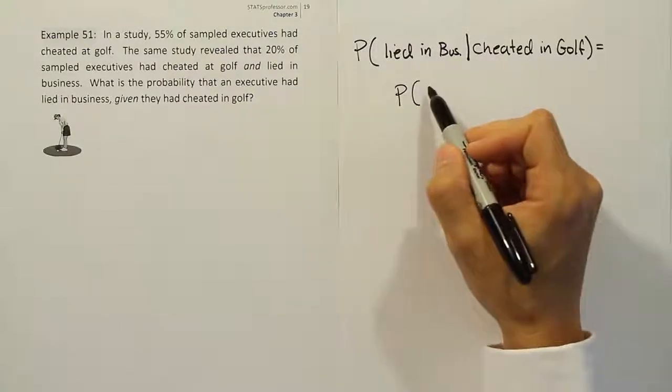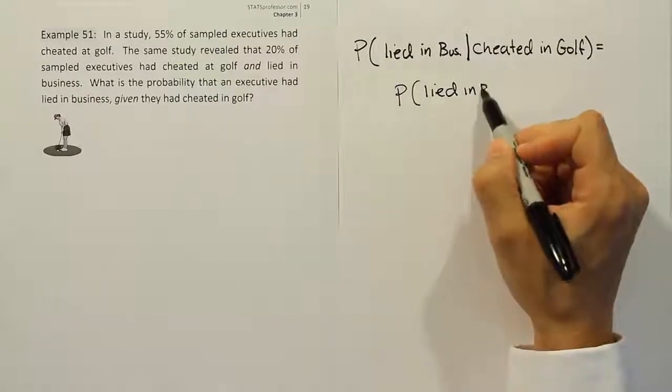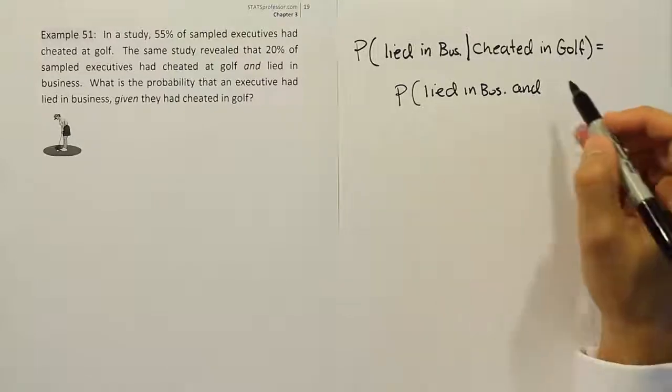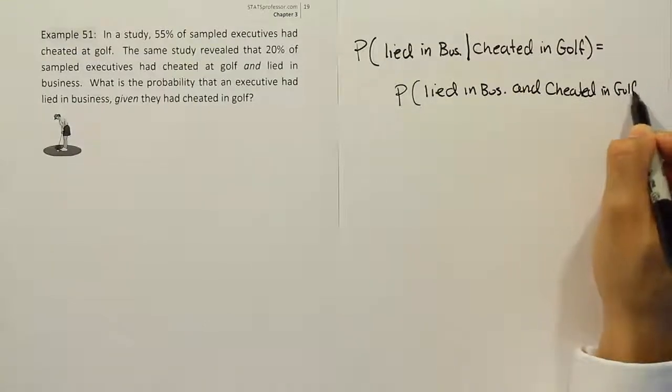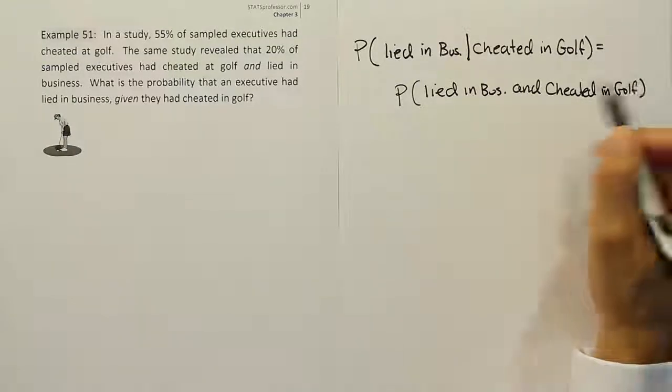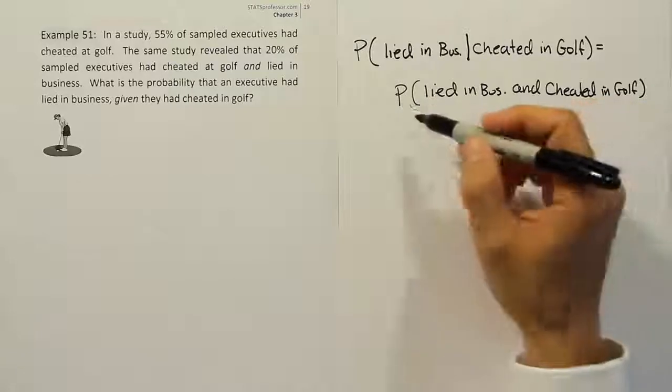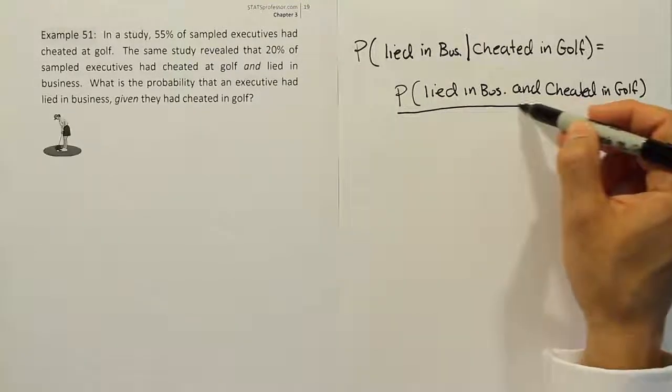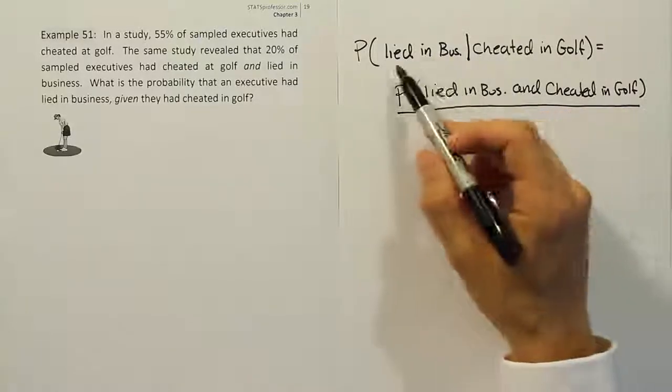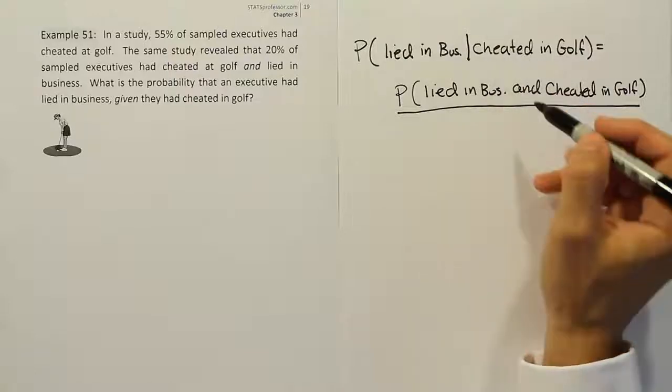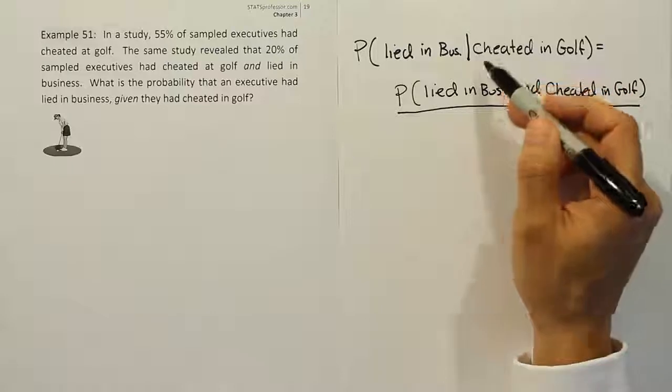And the way that works is we take these two categories and we find their intersection. So it's the probability that they lied in business and cheated in golf. So it's kind of like we're asking what percent or what number did both of these things at the same time. They're reported to be engaging in both activities. So the top part is the two of these combined in an intersection. I'll just use the word 'and' between them.